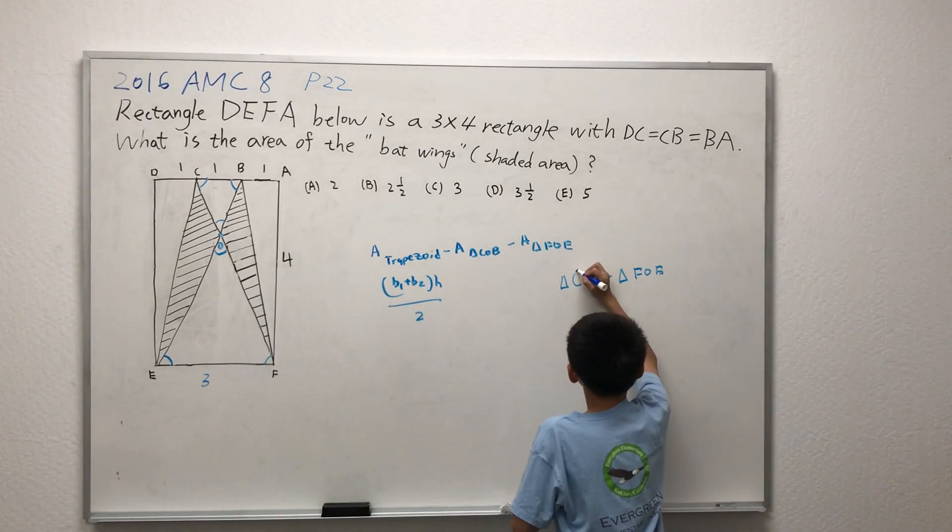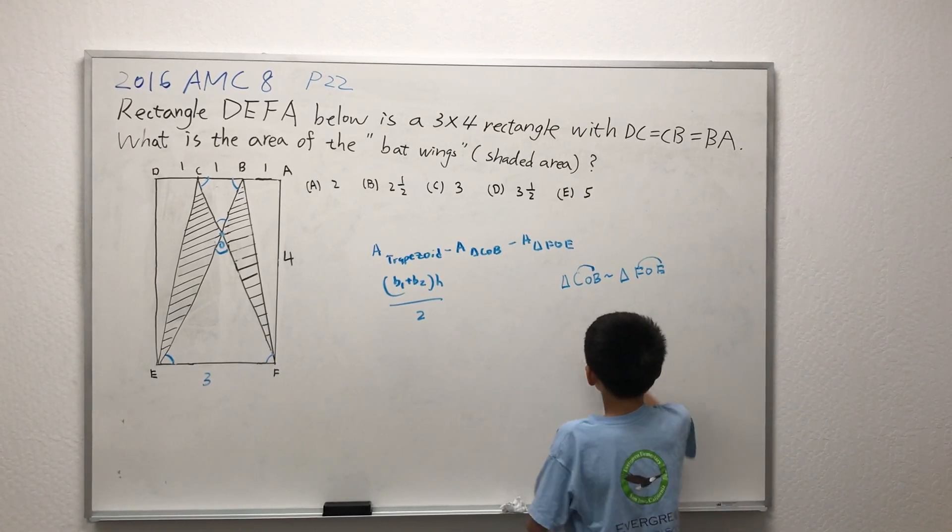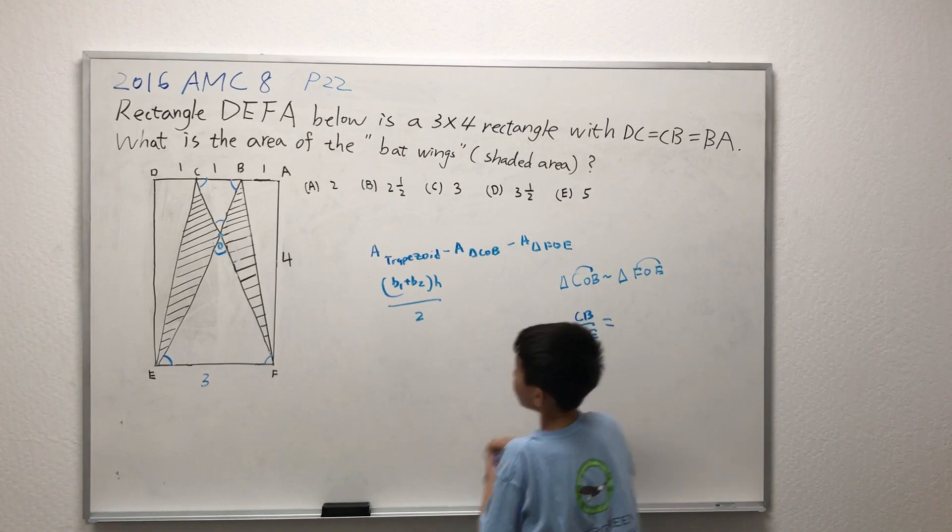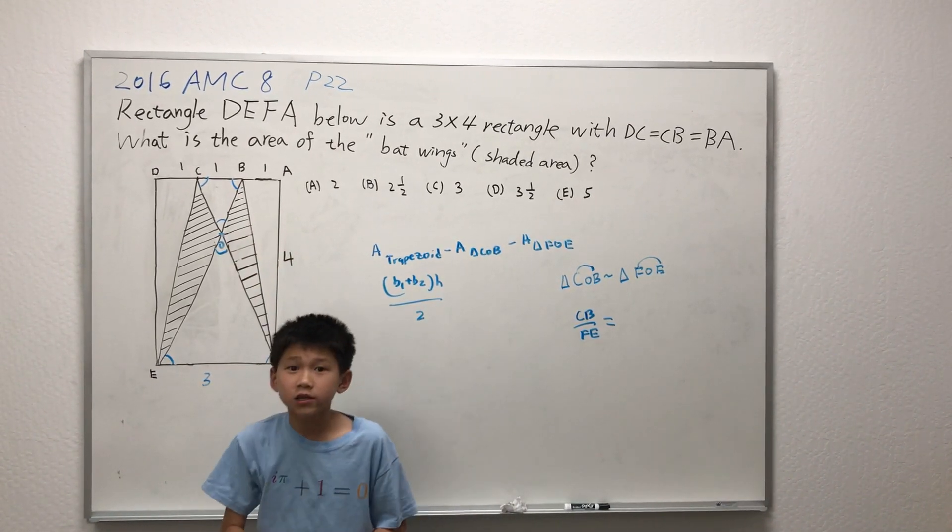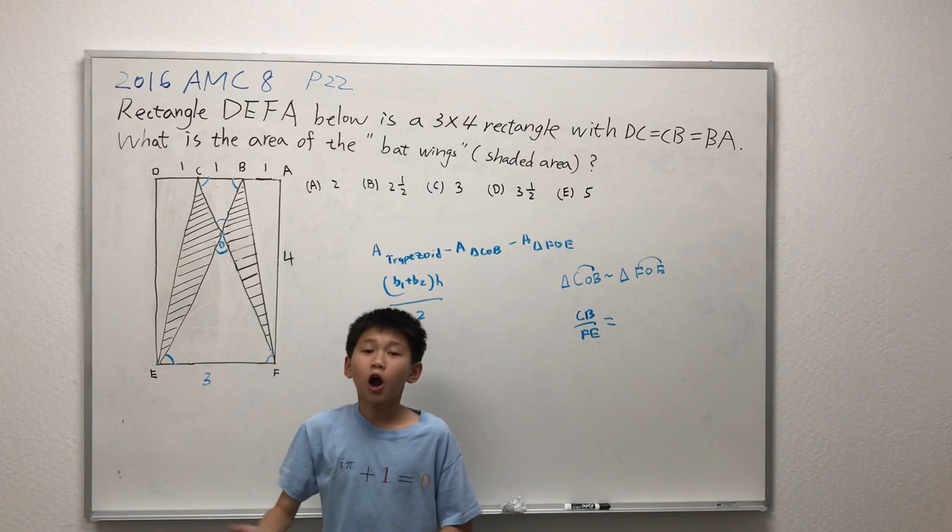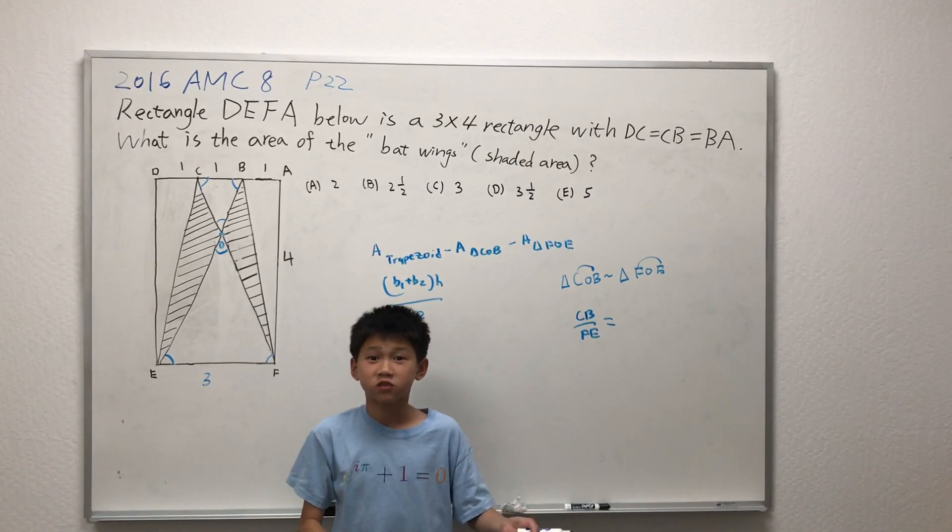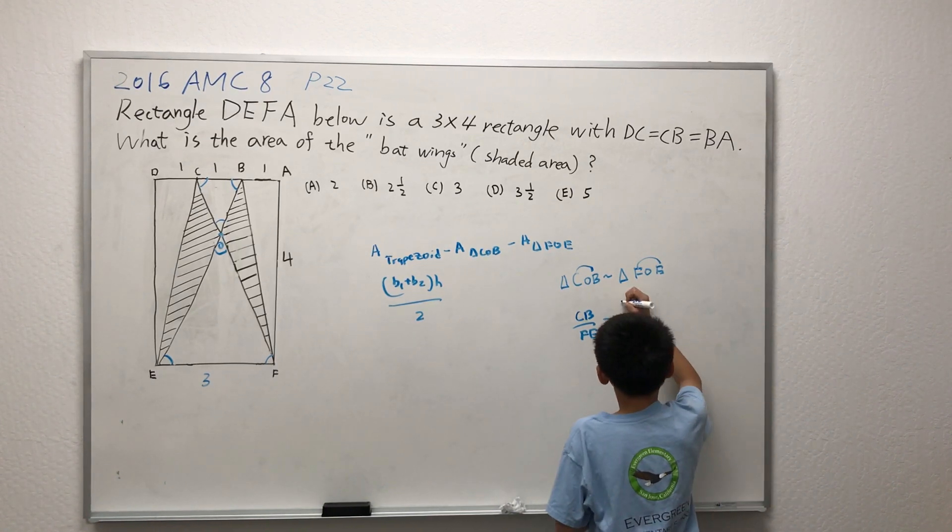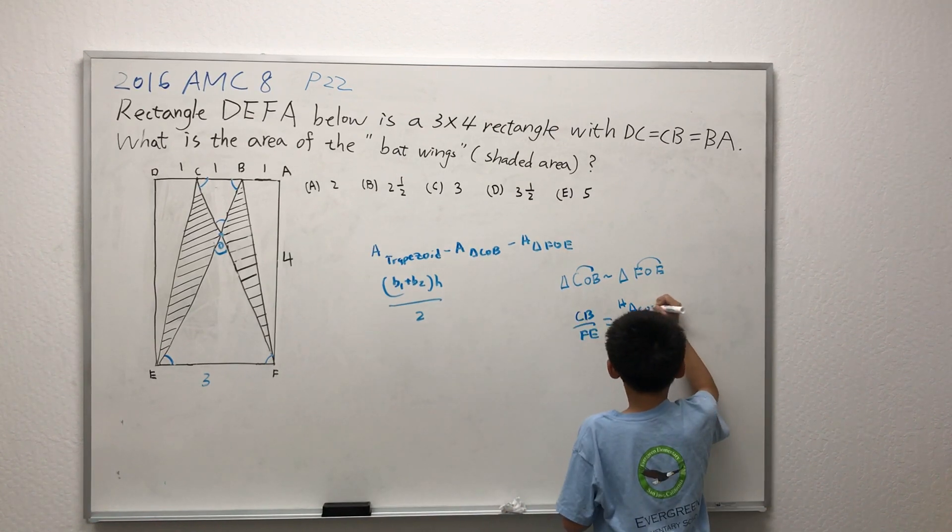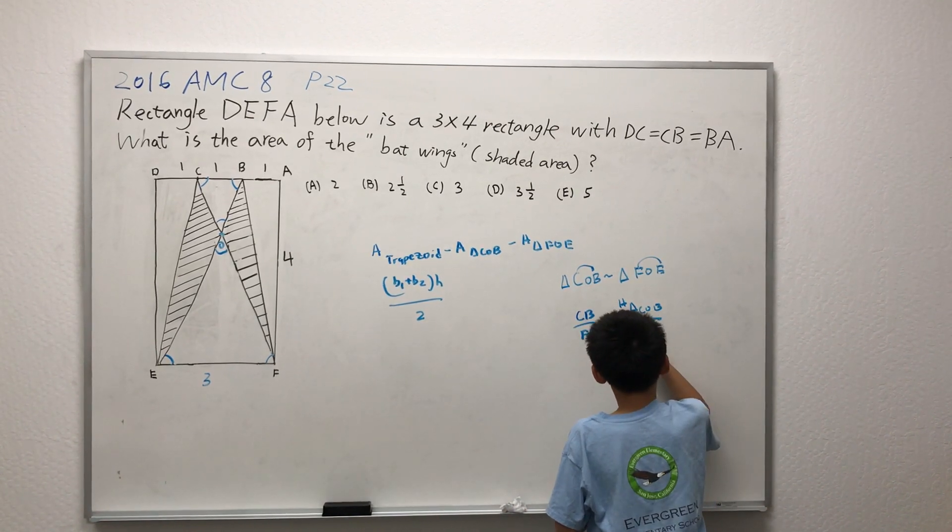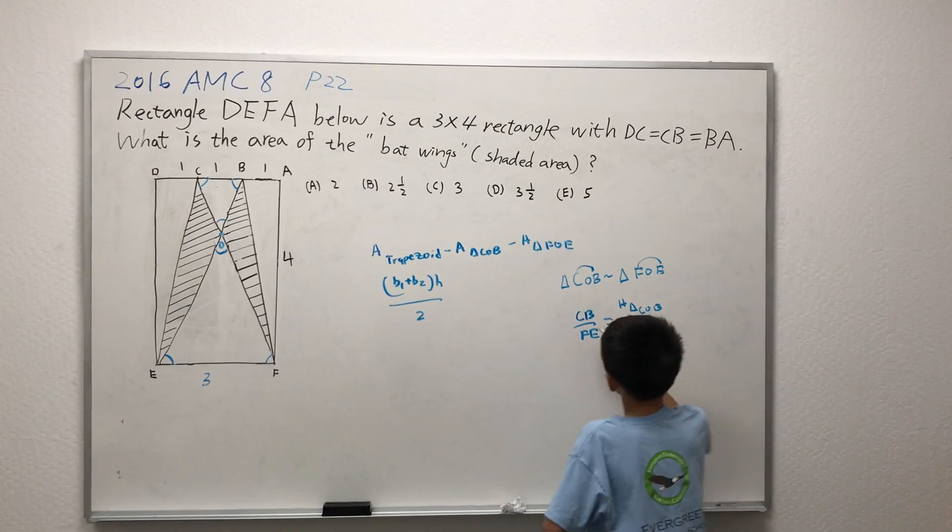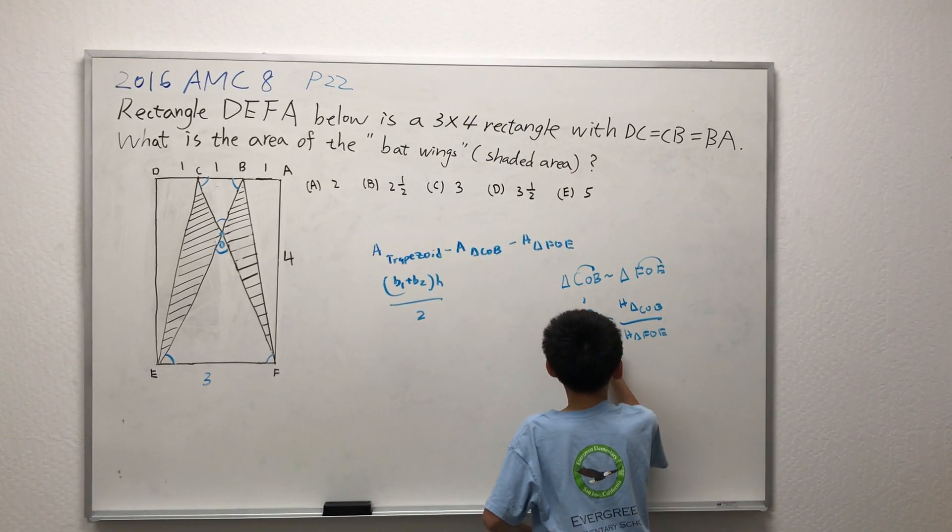We know the constants CB and FE. CB over FE will equal the ratio of the heights of the triangles, because the ratio of the heights of the triangles are proportional to the ratio of the bases of the triangles. So, CB over FE will equal the height of triangle COB over the height of triangle FOE. Substituting in values, we get CB is 1, FE is 3.